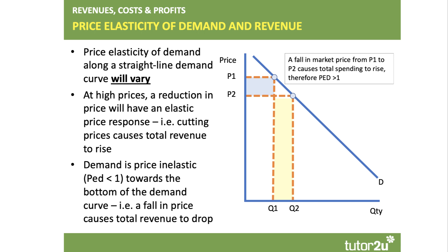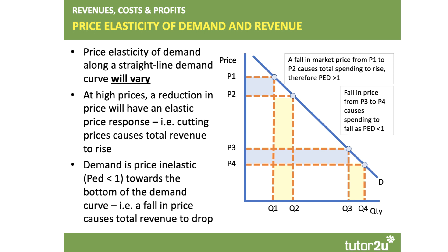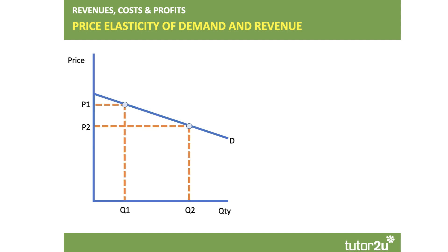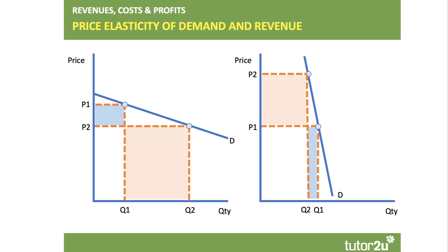We've lost the blue area because you're selling at a lower price per unit, but we've gained the yellow area in terms of selling more quantity. If that's the case, the falling price will increase revenue when demand is price elastic. However, if we cut the price from P3 to P4, we're now getting a very low price per unit - yes, we're selling a little bit more from Q3 to Q4, but the blue area of lost revenue is much bigger than the area of gain. In this case, the falling price actually causes total revenue to go down because demand is price inelastic towards the bottom of a straight line demand curve. So the firm is probably best suited to cutting price if they want to increase revenue when demand is elastic, but better off increasing price when demand is inelastic and the coefficient is less than one.